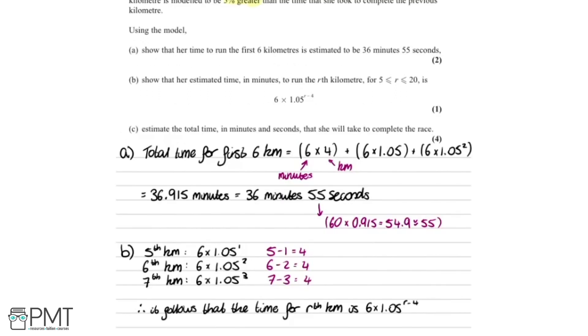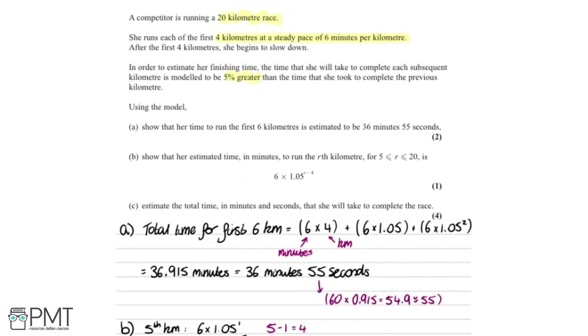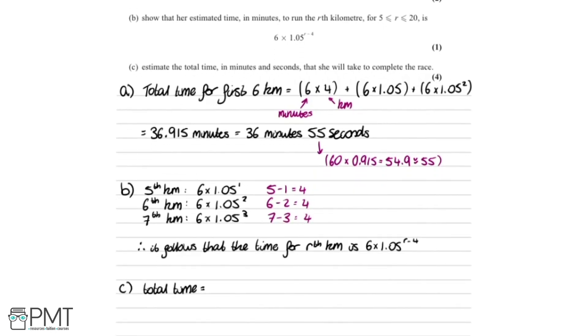And lastly, we're going to take a look at part C. We need to estimate the total time in minutes and seconds that she will take to complete the race, and that's for 4 marks. So we know that she runs a steady pace of 6 minutes per kilometer for the first 4 kilometers, and we previously worked out that was 24 minutes.